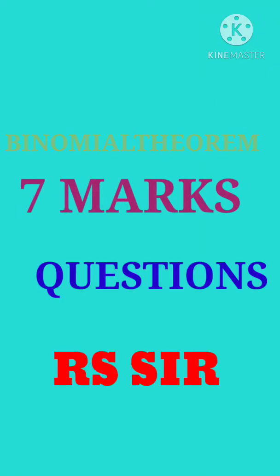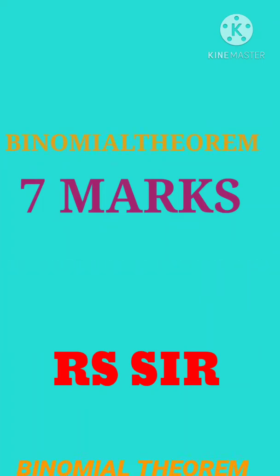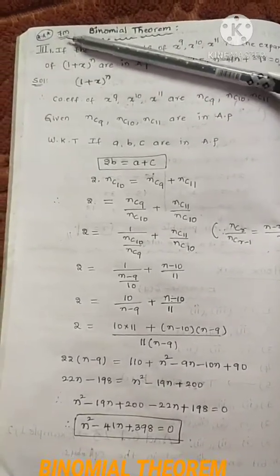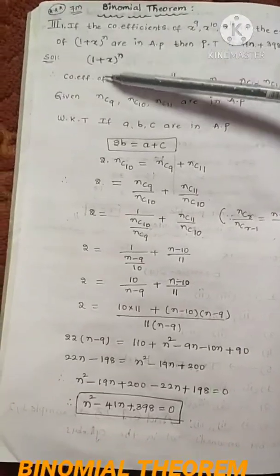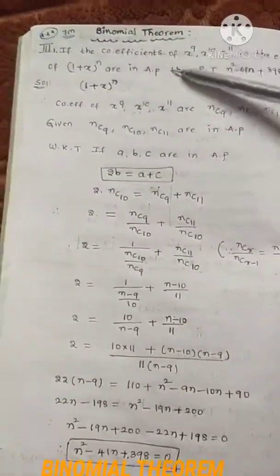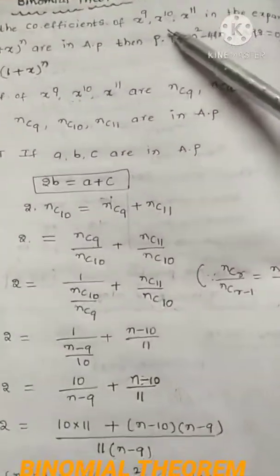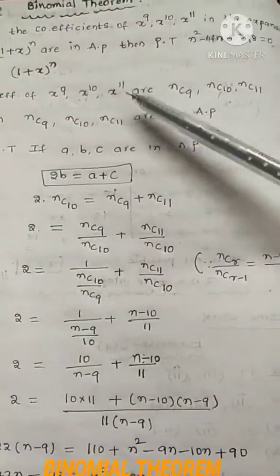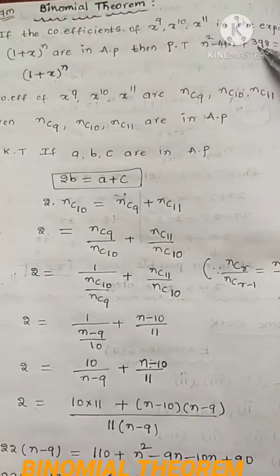Good morning, dear secondary students. I made one more new video on seven-mark binomial theorem questions from the first exercise. These are very important three-star questions and we may definitely expect one question from these in the board examination. Now, this video covers binomial theorem essay questions — seven-mark, three-star questions. We have just five questions. Observe: if the coefficients of x⁹, x¹⁰, x¹¹ in the expansion of (1+x)ⁿ are in arithmetic progression, then prove that n² - 41n + 398 = 0.